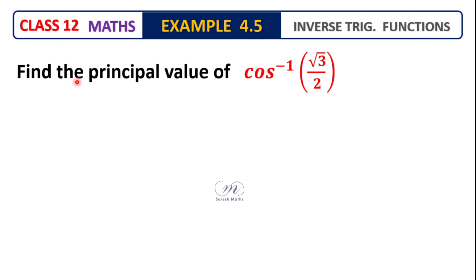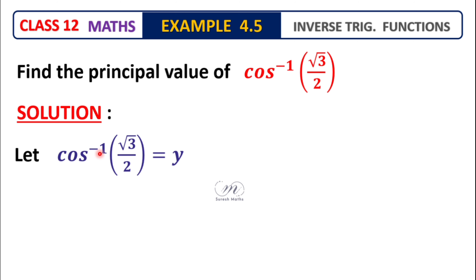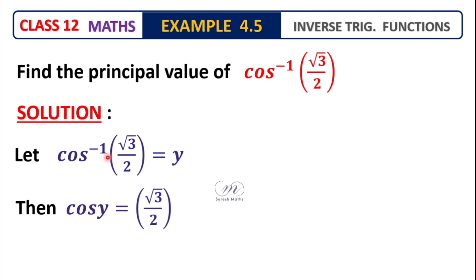Example 4.5: Find the principal value of cos inverse of root 3 by 2. Solution: Let cos inverse of root 3 by 2 be equal to y. Then cos inverse becomes cos on the right side, so y becomes cos y. The left side, root 3 by 2, remains. So it can be written as cos y is equal to root 3 by 2.